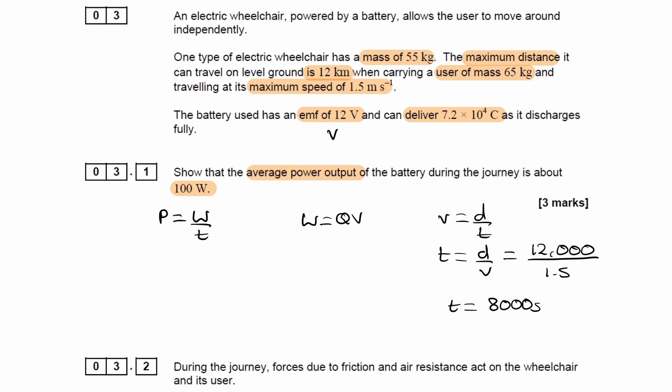Now we can put everything together. Power is work done over time, so QV over time, which will be 7.2 times 10 to the 4 multiplied by 12 volts all divided by 8,000. And that gives 108, which is approximately 100 watts.